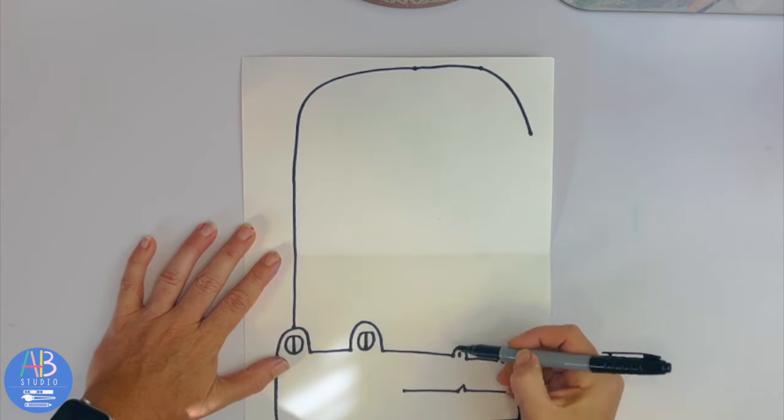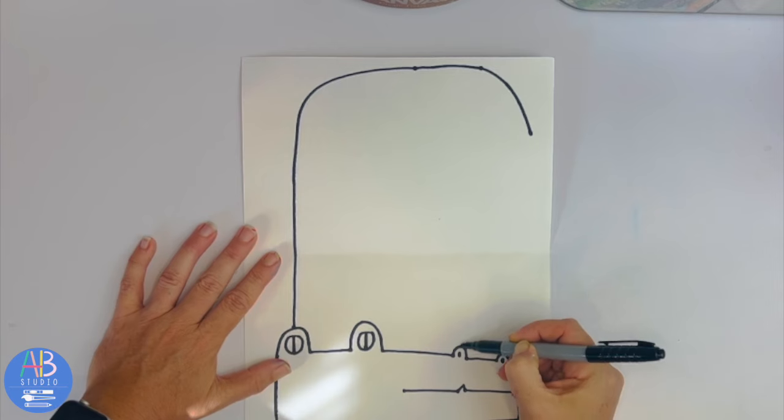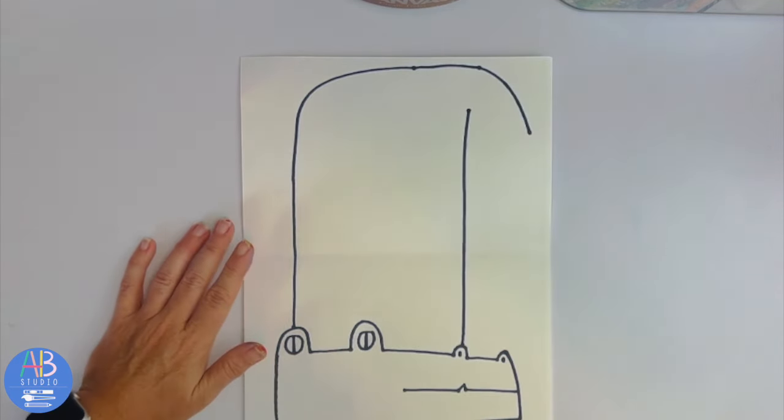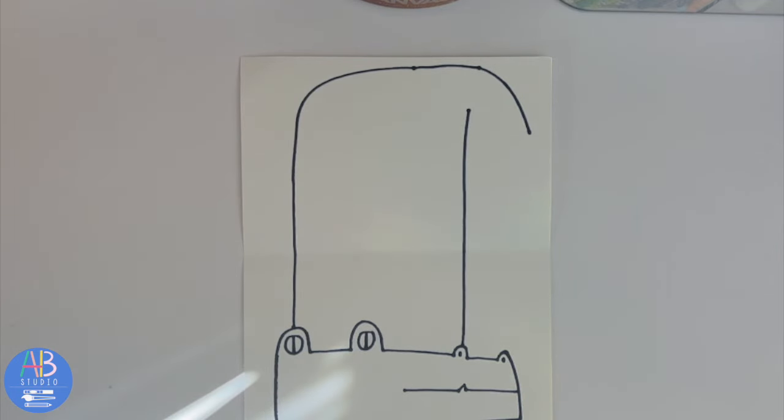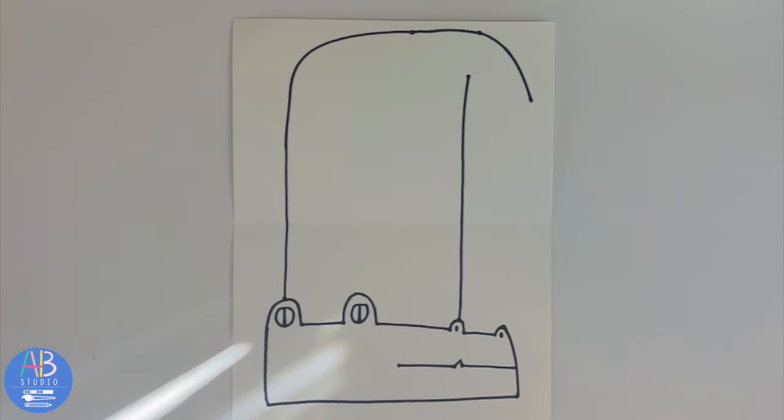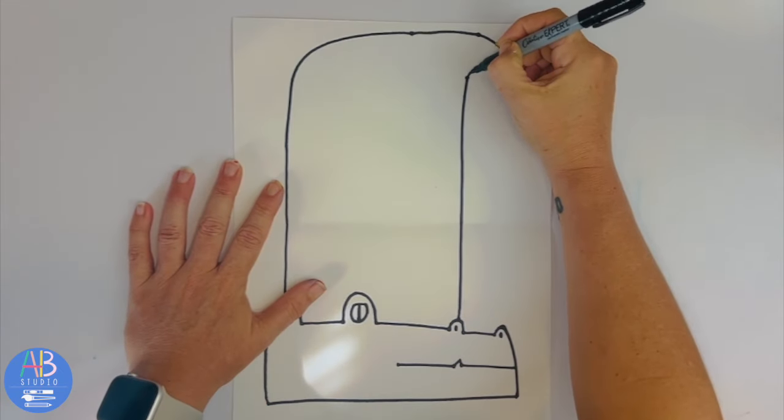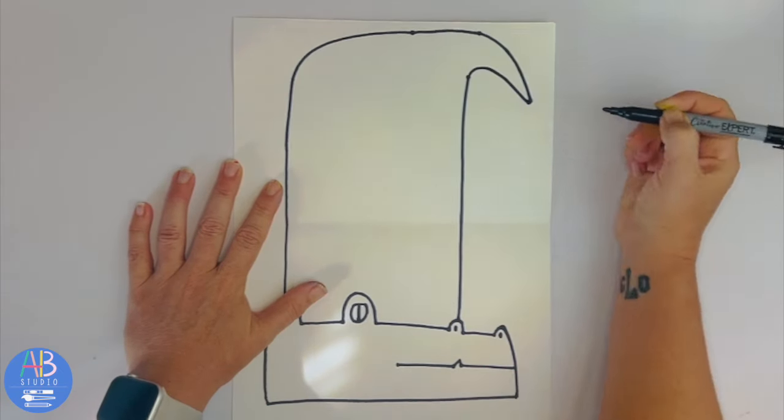So I'm gonna start my second line not right around the nostril, right here. I'm gonna come up but stop right there. I'm not going to connect it all the way there. So again, that second line I stopped, I did not go all the way to the top. And then I'm gonna curve and connect to the tail. So it's more of a point, looks like a big hat.